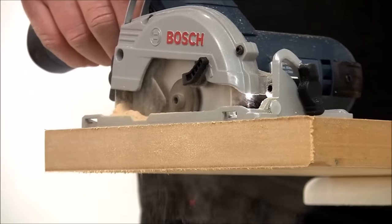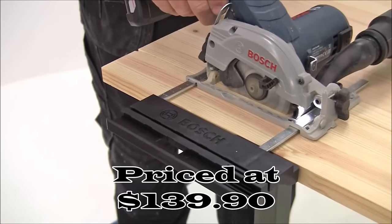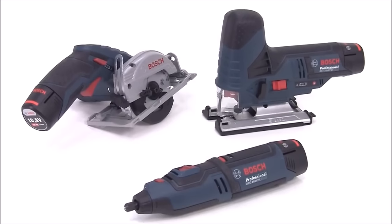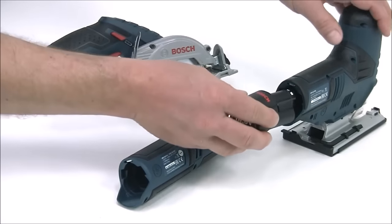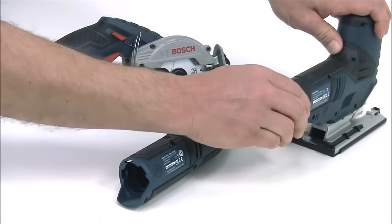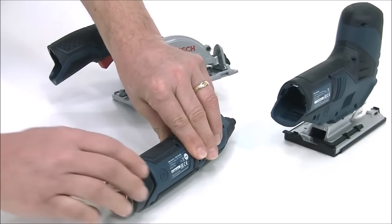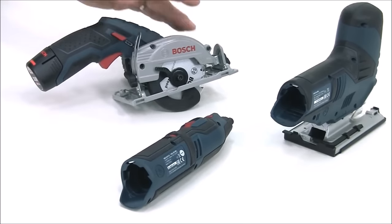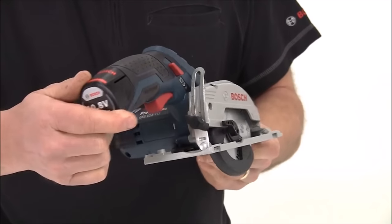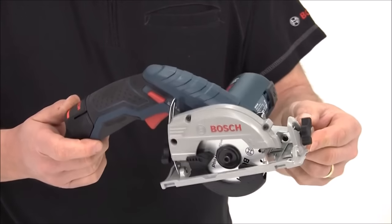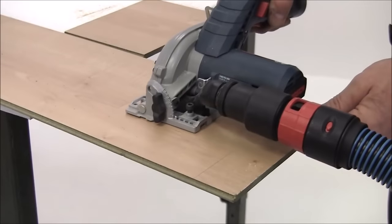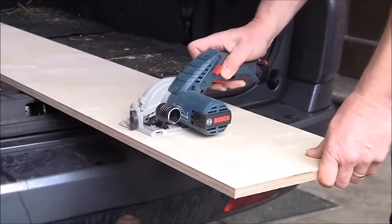Number four, the Bosch GKS 10.8 V-LI Professional cordless circular saw, priced at $139.90, is renowned for its compact design, making it highly maneuverable and suitable for various wood applications. Its ergonomic design features a slim handle and low weight of only 1.4 kilograms, ensuring maximum comfort during extended use. One notable feature is the practical battery charge level indicator, allowing users to check the remaining battery energy at any time, ensuring uninterrupted workflow and efficient usage.